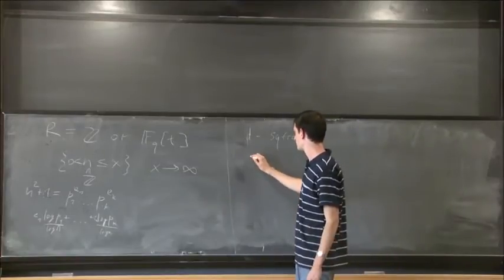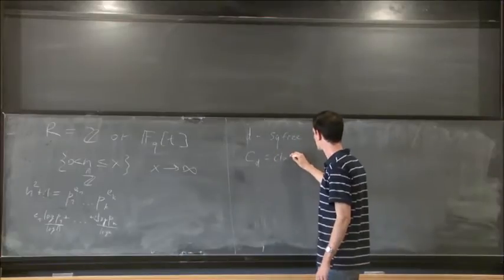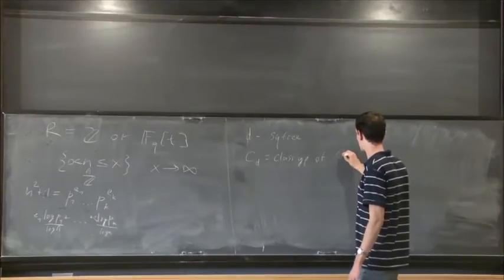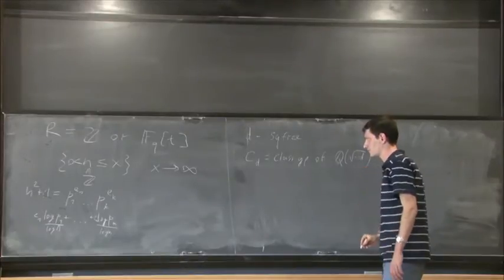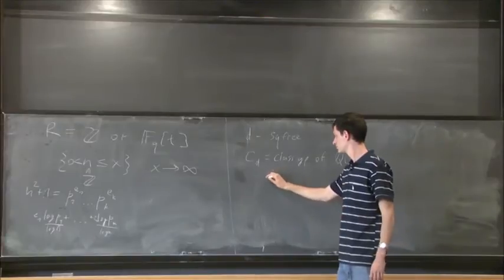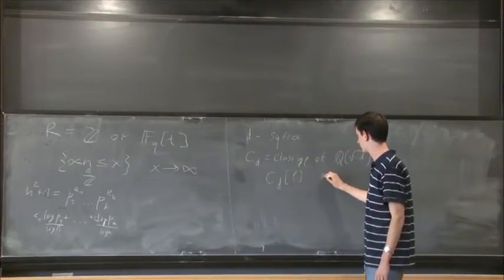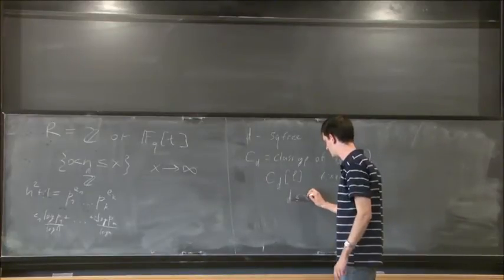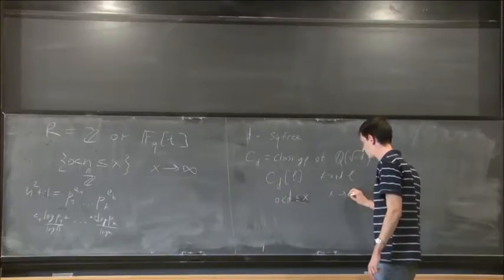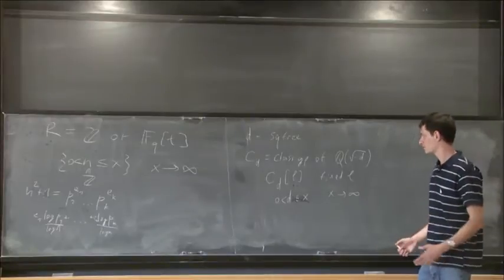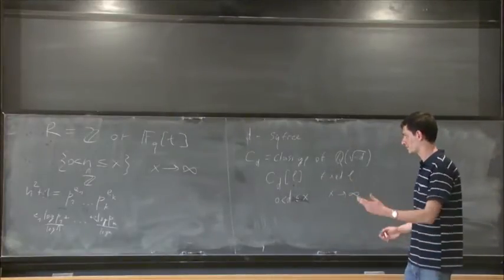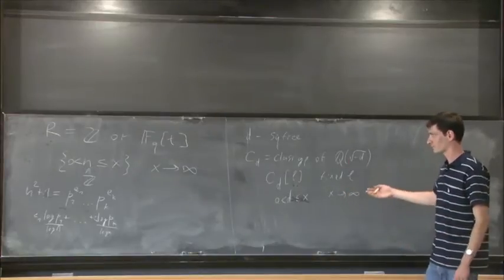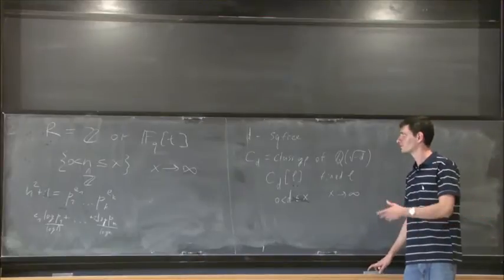Another example: let d be square-free integers. Other types of arithmetic objects which we may attach to d is, for example, the class group of the quadratic field Q(√-d). We may ask, for example, for its l-torsion for some fixed l, and take again all the d between 0 and x, x going to infinity, and we may ask how this group is distributed. For example, what's the probability that it's cyclic or has any other given dimension? This question is of course open. There's the Cohen-Lenstra heuristics which we don't know how to prove in general.